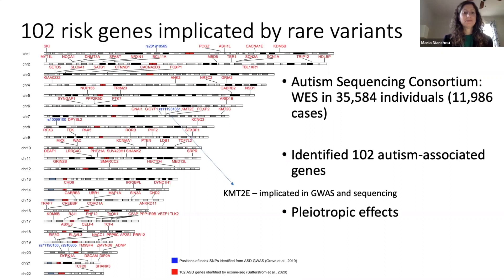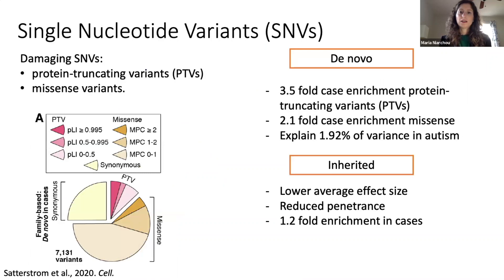Similar to the high genetic correlations found for common polygenic risk for autism with other neurodevelopmental and neurological traits, autism-associated rare variants are also associated with risk for other conditions including intellectual disability, schizophrenia, ADHD, and epilepsy.